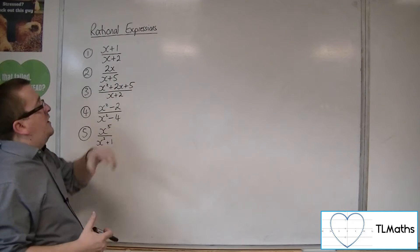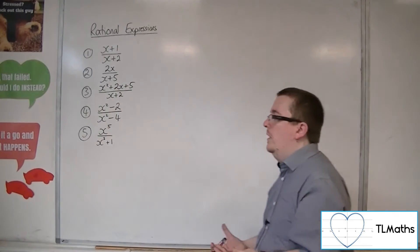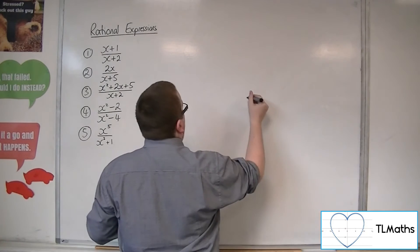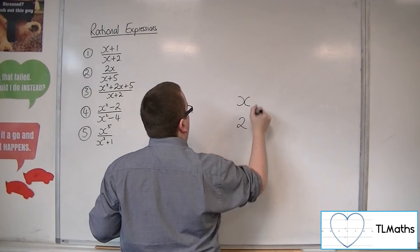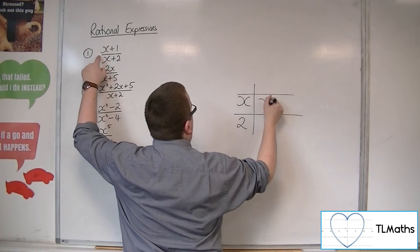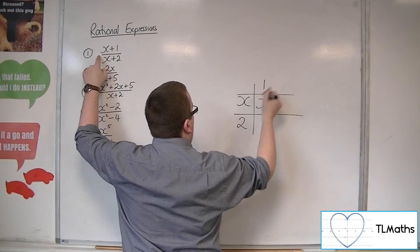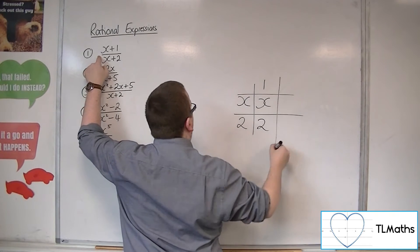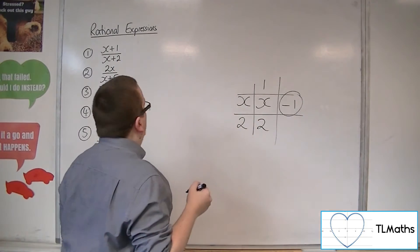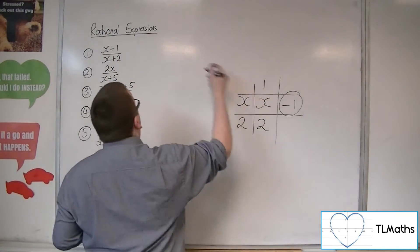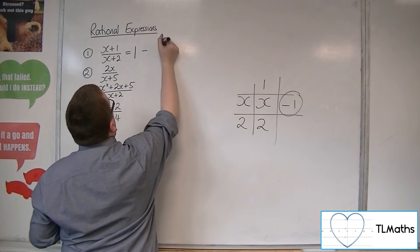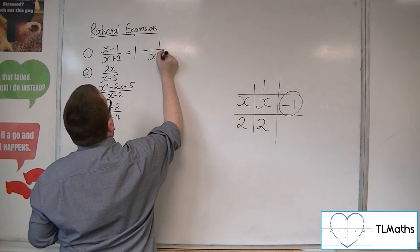For example, if I have (x+1)/(x+2), I can use polynomial division. Writing x+2 on the left-hand side, x goes in once giving 1. 1 times 2 is 2, but I need 1, so I subtract 1. That's my remainder: minus 1. So I get 1 minus 1/(x+2).